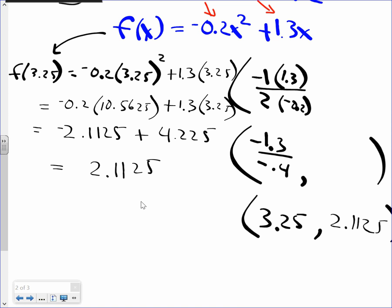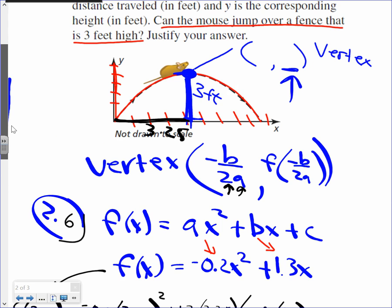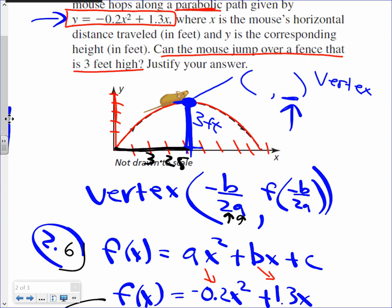Is the mouse dinner or is he not? The mouse is dinner. Look at the vertical distance is 2.1 feet. He didn't make the fence of 3 feet. He's only jumping 2.1 feet approximately. The mouse is dinner. So using the math I already taught, you were able to do this word problem.